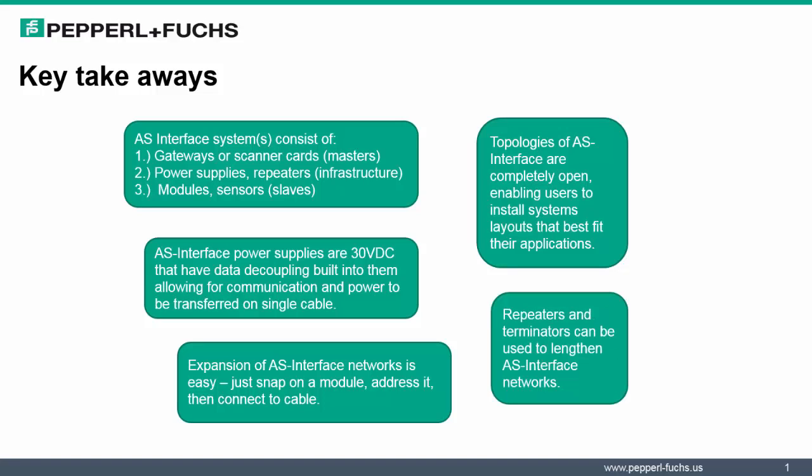And finally, repeaters and terminators. As we talked about extending the networks, these are very advantageous components to consider when you're trying to lengthen the AS Interface networks. One final reminder also I wanted to add is that the literature we spoke of specifically on the maintenance and troubleshooting guide and the product overview guide is available on NetPartner. So I encourage each of you to order your copies of that through NetPartner.